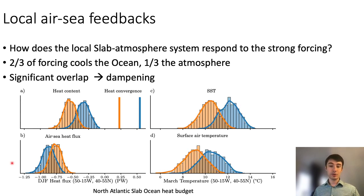This results in corresponding changes in SST and surface temperature at the end of the forcing season in March. Shown here the SST distribution and shown here the surface temperature distribution at the end of the season. What's interesting is that you can see a significant overlap between the ensembles showing the importance of internal variability despite the strong forcing.